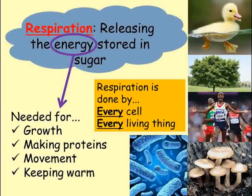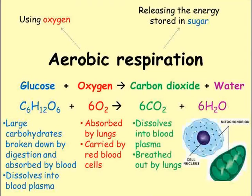It's a chemical process, so let's look at the chemical formula for aerobic respiration. Aerobic means using oxygen, so aerobic respiration means breaking down sugar using oxygen to release energy. The products of the reaction are carbon dioxide and water.